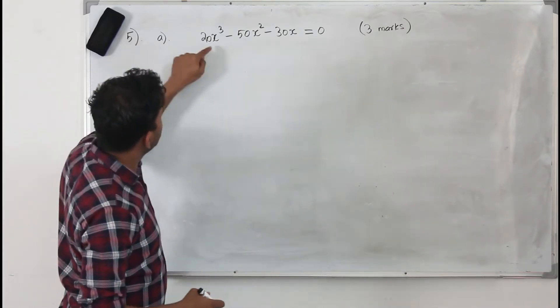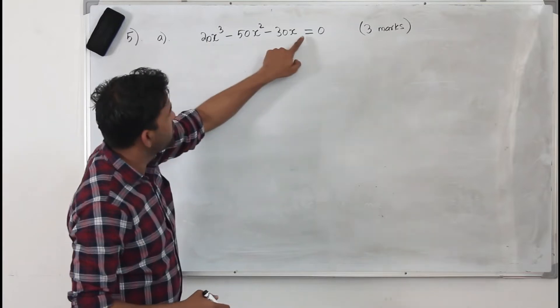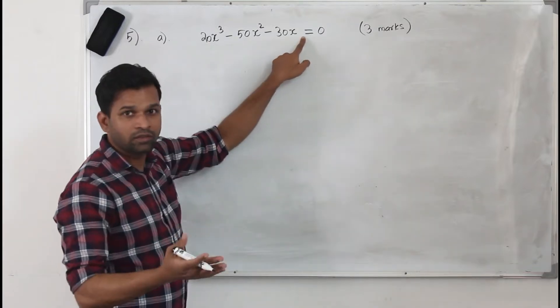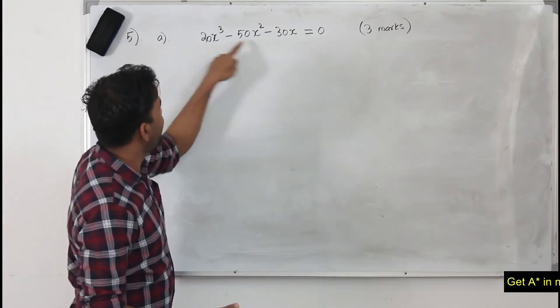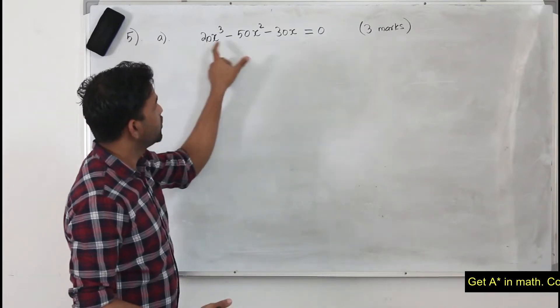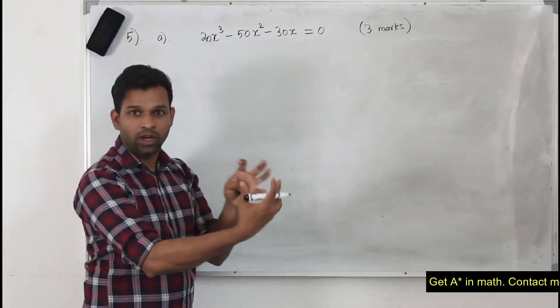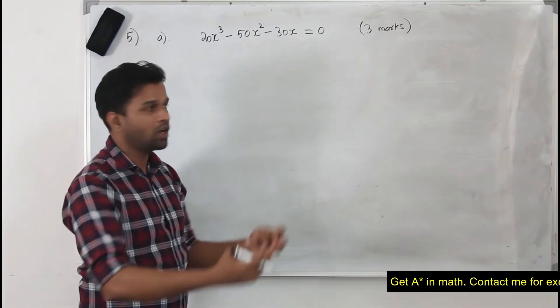This is a cubic equation, but the good thing is the cubic equation has no constant term. If there is no constant term it's easy — you take x out, so you will be left with a quadratic function to solve.